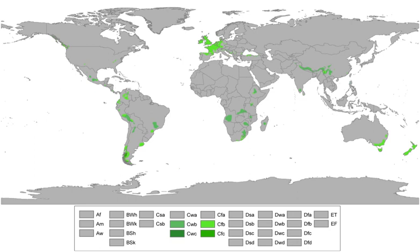In most areas with an oceanic climate, precipitation comes in the form of rain for the majority of the year. However, some areas with this climate see some snowfall annually during winter. Most oceanic climate zones, or at least a part of them, experience at least one snowfall per year. In the poleward locations of the oceanic climate zone — subpolar oceanic climates — snowfall is more frequent and commonplace.